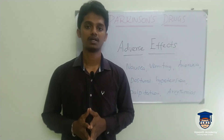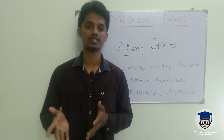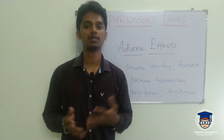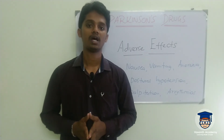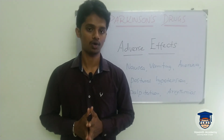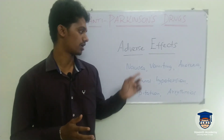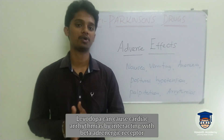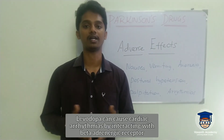Adverse effects: since most of the Levodopa drug is metabolized outside the brain and converted to dopamine peripherally, adverse effects are mostly produced peripherally. These include nausea, vomiting, anorexia, postural hypotension, palpitation, and arrhythmias.